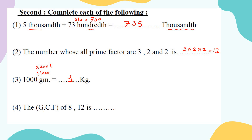Find the GCF of 8 and 12. I prefer prime factorization. For 8: 8 equals 2 times 4. Two is prime — circle and keep it. Four is composite, so break it down: 4 equals 2 times 2. Both are prime — circle and keep them. So 8 equals 2 times 2 times 2.